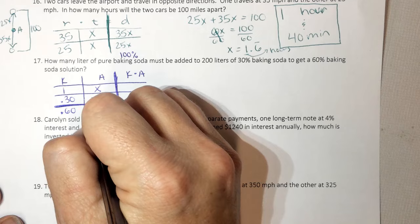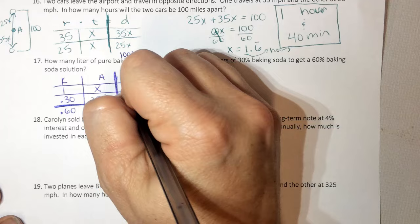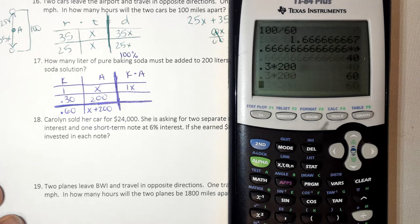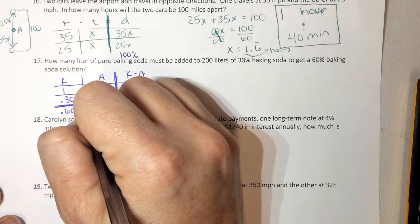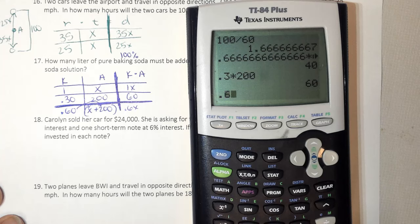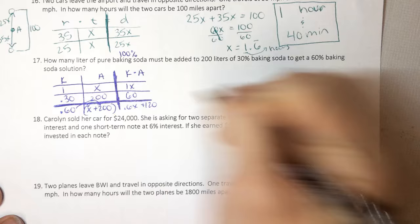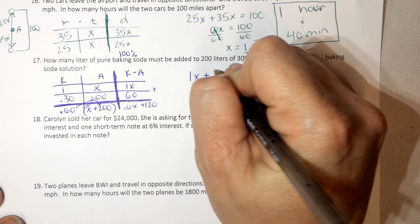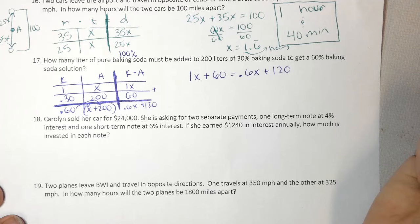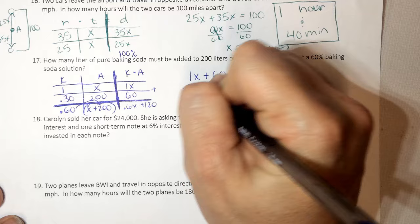And I'm using 200 liters of the 30%. And it says how many liters of pure, so we don't know. Here I add. Now I'm done filling in my table, and I multiply. So this is 1x. And that gives me 60. Here I have to distribute, so I get 0.6x. And then 0.6 times 200 is 120.